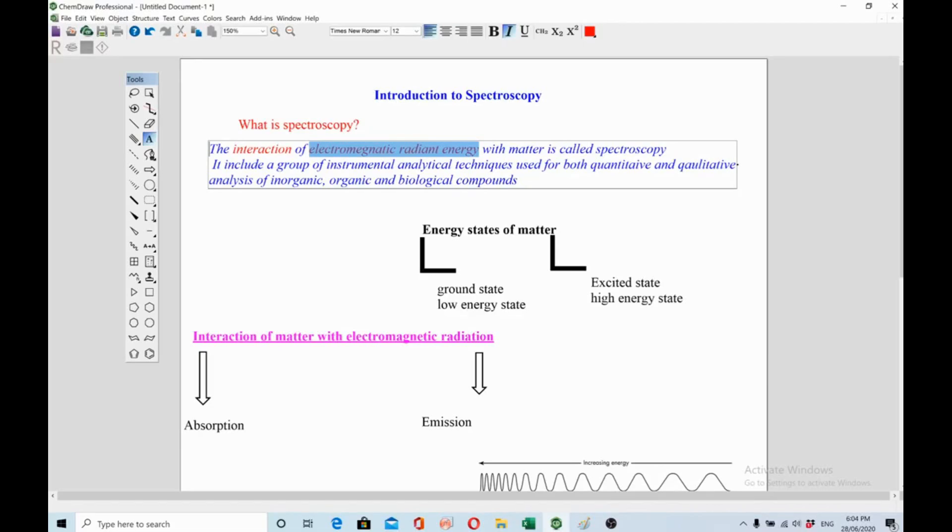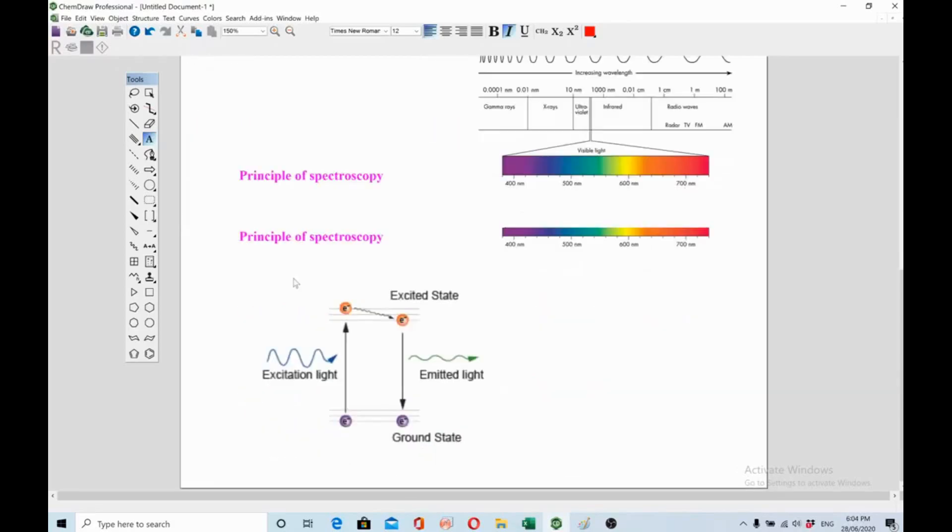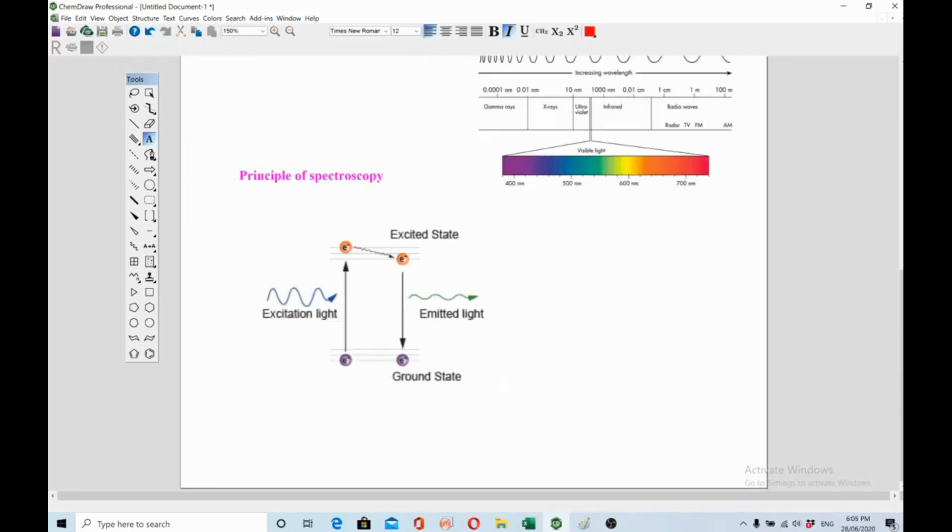We discussed what kind of use is this spectroscopy: quantitative and qualitative. Then we discussed the energy states of matter, ground state and excited, and then we discussed how the matter is interacting with electromagnetic radiations. There are two methods: one is absorption and another is emission. Then we discussed the electromagnetic radiation spectrum and lastly we discussed the principle of spectroscopy. I hope you like this video. Please subscribe this channel and keep watching more videos. See you with the next video, bye.